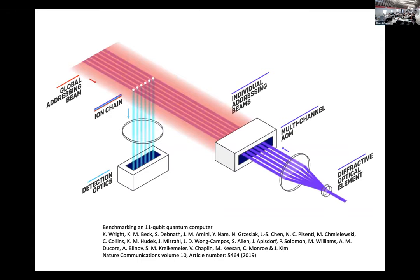This picture is taken from a paper by the IonQ team showing their system. What we have here is a trapped ion register with a multi-channel AOM that can turn individual beams on and off on demand to enable individual addressing for quantum gates. There's also a global beam that shines on all the ions, but qubit gates only happen when two beams are present. Ions conveniently shine all their light through a viewport and into the detectors.